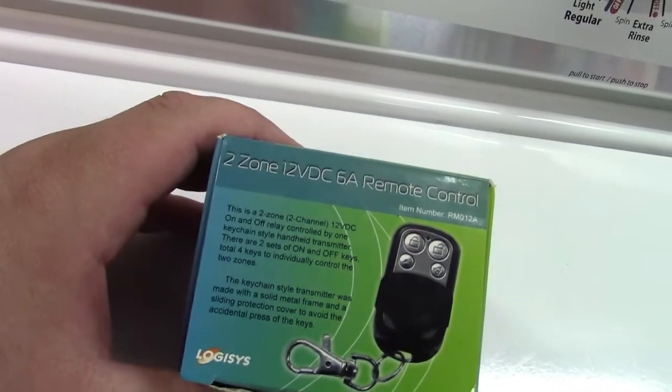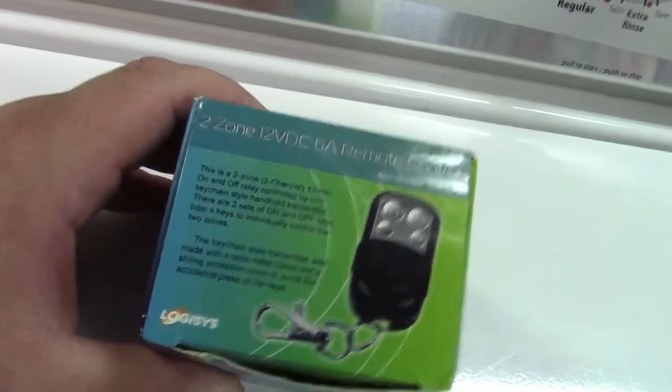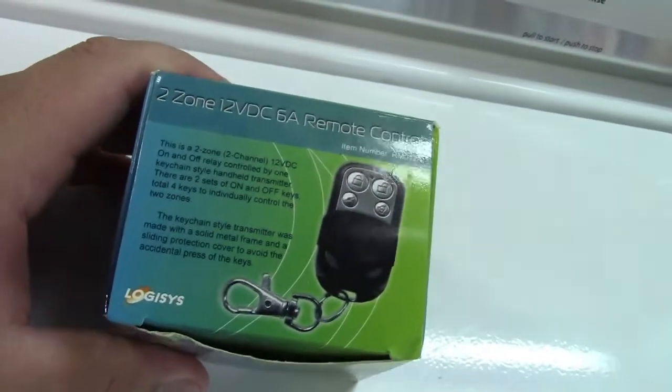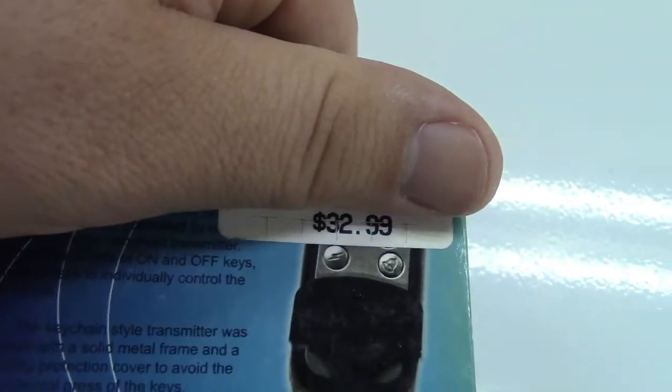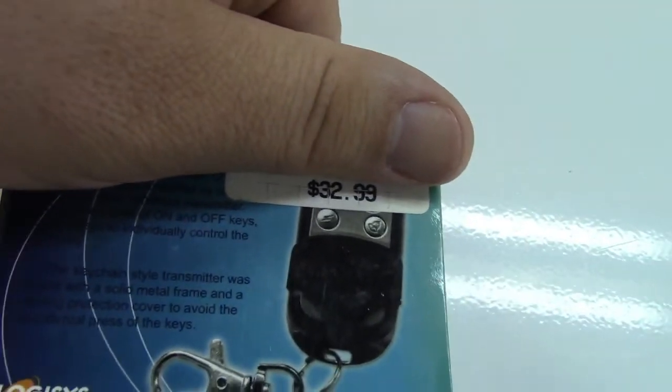Here's a 2-zone 12-volt DC 6-amp remote control made by Logisys. I picked this up at TigerDirect back in the day. I did not pay $33 for it, but it still was kind of expensive at like $22, $21, something like that.